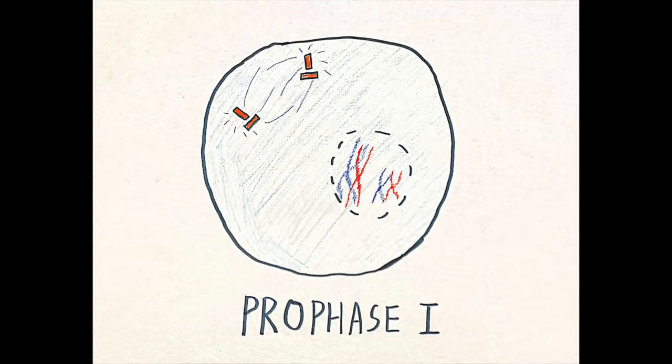the pachytene phase, the diplotene phase, and the diakinesis phase. In prophase I, homologous chromosomes pair up with paternal chromosomes and exchange genetic information. This forms at least one crossover per chromosome.